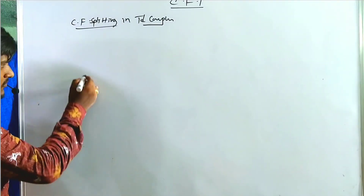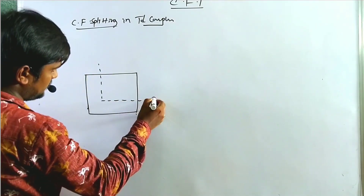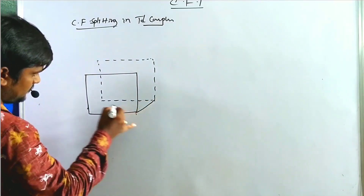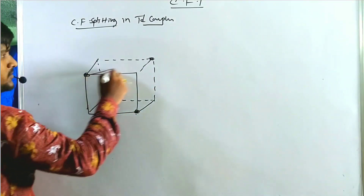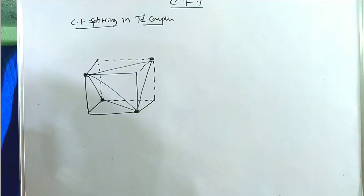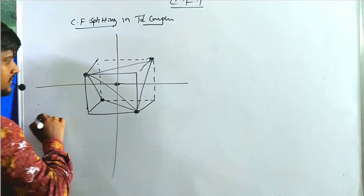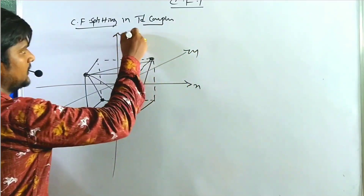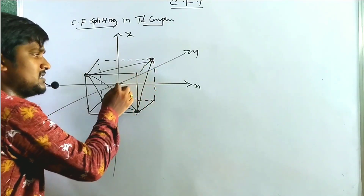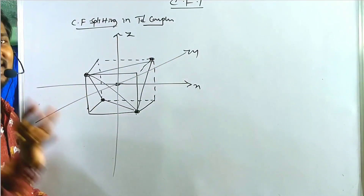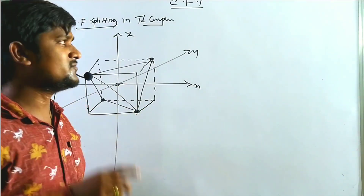We know that tetrahedral complexes are oriented with four ligands connected together. In the tetrahedral molecule, the X, Y, Z axes are oriented accordingly. In the formation of tetrahedral complexes, the ligand approaches the central metal atom neither along the axis set, nor in between the axis set. However, it is somewhat closer to the T2g orbital set.